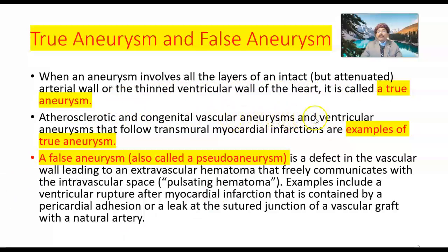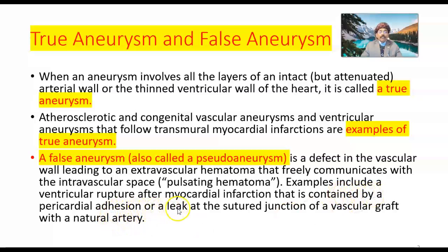Atherosclerotic and congenital vascular aneurysms, and ventricular aneurysms that follow transmural myocardial infarction, are examples of true aneurysms. A false aneurysm, also called a pseudo-aneurysm, is a defect in the vascular wall leading to an extravascular hematoma — a collection of blood that freely communicates with the intravascular space — causing a pulsating hematoma. The blood clot may extend to the main blood vessel and may block or close major branches.